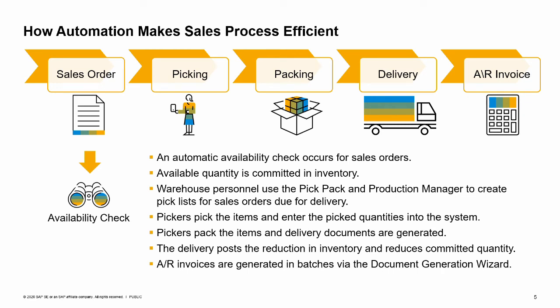Let's look at an example of how automation can make the sales process more efficient. An automatic availability check occurs when you enter items and quantities in a sales order. When the items are confirmed as available, the quantity is committed in inventory. Warehouse personnel access and filter open sales orders in the pick-pack and production manager to create pick lists for sales orders due for delivery.